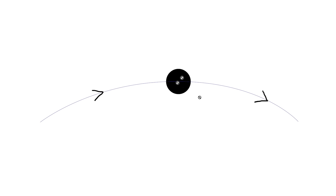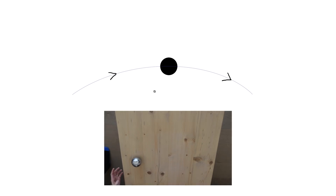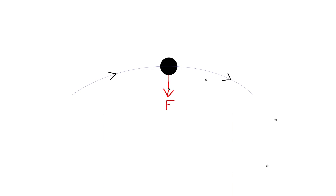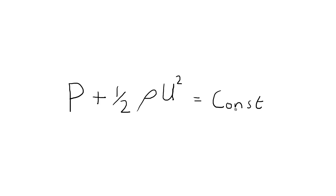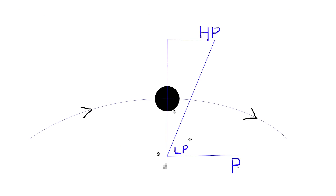We also looked at the ball rolling in a curved path on the tilted table. In order for the ball to follow that curve, a force had to act on it — gravity in that case. If this wasn't a ball but a parcel of air following a curved streamline, what force would make it curve? Pressure. We could have a pressure gradient: higher pressure on one side, lower pressure on the other, and that gives us a net force causing the air to follow a curved path. Does that make sense? So a pressure gradient, just like gravity for the ball, is what forces air to curve.